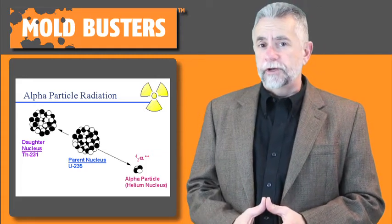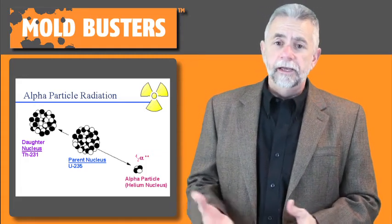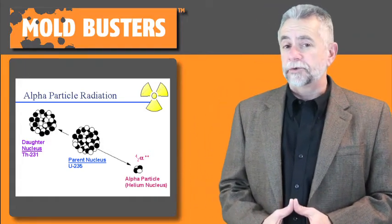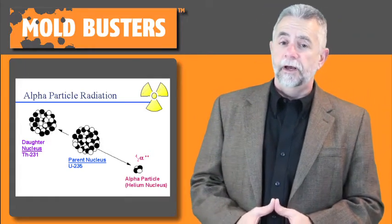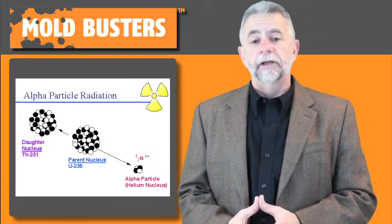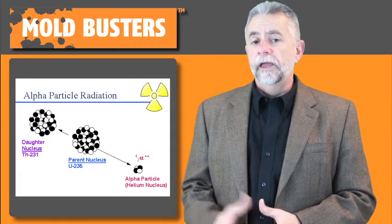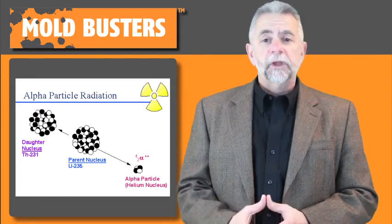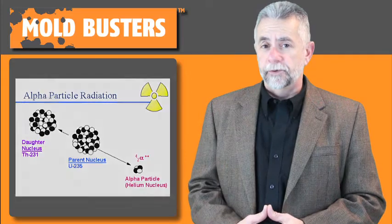If an alpha particle strikes the chromosomes in a lung cell, it can alter the way that cell reproduces. Our body's immune system should recognize and destroy these mutant cells before they can multiply over 10 to 20 years into a recognizable cancerous growth. However, some people have weak immune systems, and because of this, radon's impact varies from person to person.